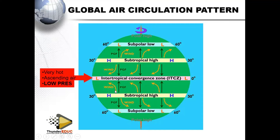At the equator, it is very hot. As the Earth tries to rotate around its orbit, the sun will appear twice at the equator, which makes it hotter. Therefore, within the equator we know that there is ascending air, and therefore the pressure is low.